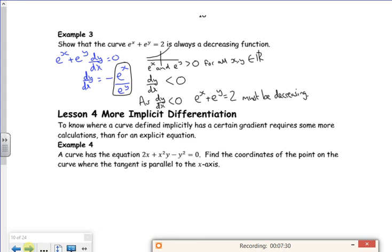If dy/dx is less than zero, e^x + e^y = 2 must be decreasing. It's always good to sneak in at the top that it's decreasing if dy/dx is less than zero, just to tell the marker you know what you're doing. That's the end of the second video.